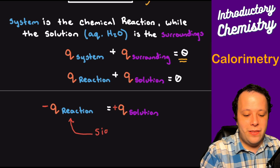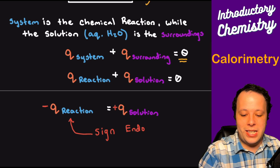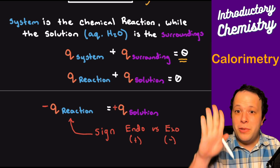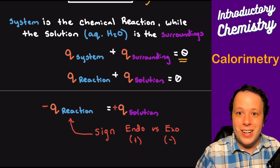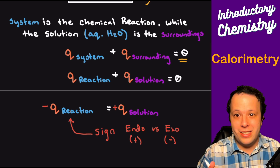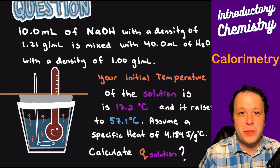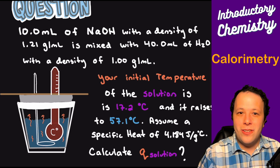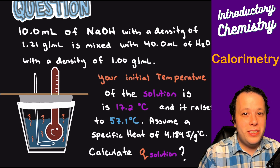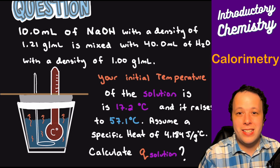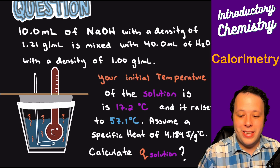The signs will be opposite of one another — this is what allows you to tell if something is exothermic or endothermic. The sign of q-reaction tells you: positive is endothermic and negative is exothermic. Now let's look at some problems. We have 10 milliliters of sodium hydroxide with a density of 1.21 grams per milliliter mixed with 40 mL of water at a density of 1 gram per milliliter.